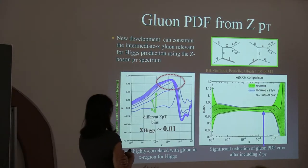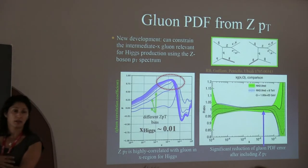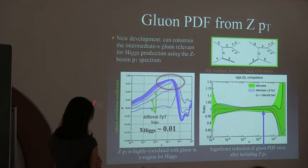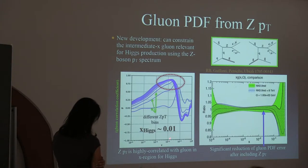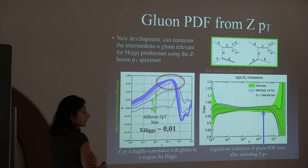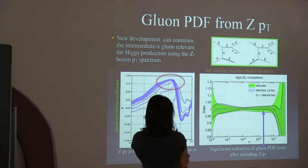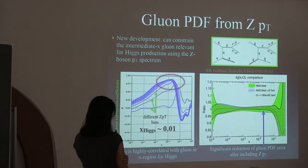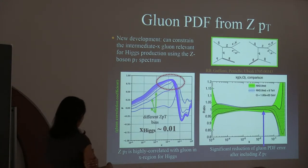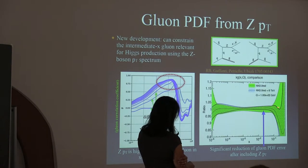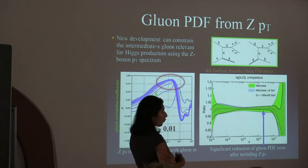The Z pT distribution, calculable at NNLO via Z plus jet, is important for constraining gluon PDFs. The gluon correlation coefficient as a function of Bjorken x shows a strong correlation between ZPT bins and Bjorken x around x of order 0.01 — the region important for understanding Higgs properties. Including ZPT data in the PDF fit leads to a clear improvement in PDF uncertainties.